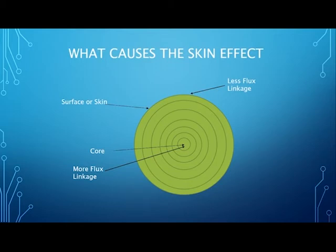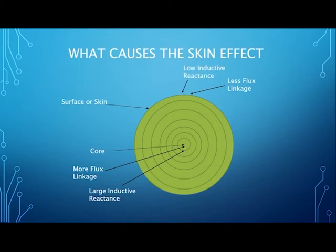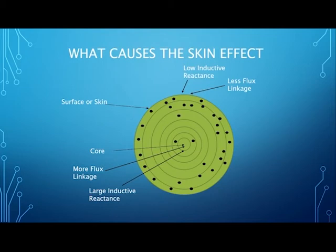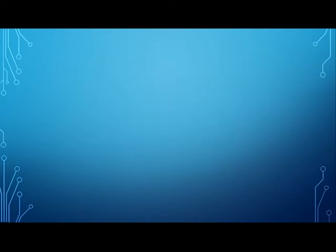As a result of the increased flux density, there is more inductance induced at the center or core of the conductor, leading to large inductive reactance at the core compared to the surface. Due to this high reactance at the core, current is distributed in a non-uniform manner — the bulk of current flows through the outer surface or skin, and very little or no current flows through the core. This phenomenon is called the skin effect, and we can observe this non-uniform current distribution in the diagram.